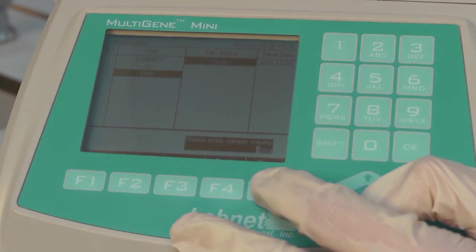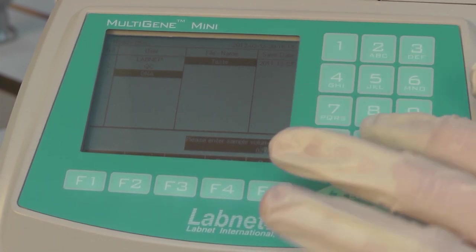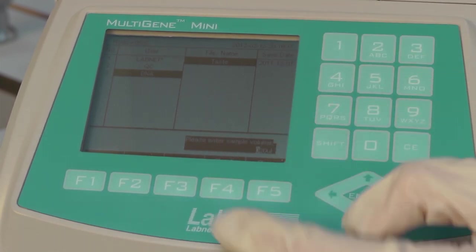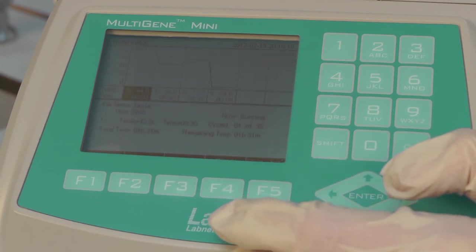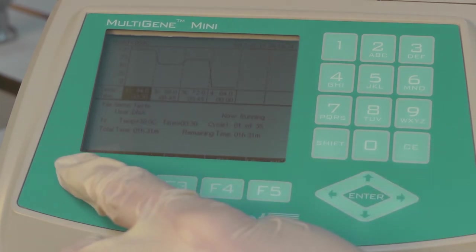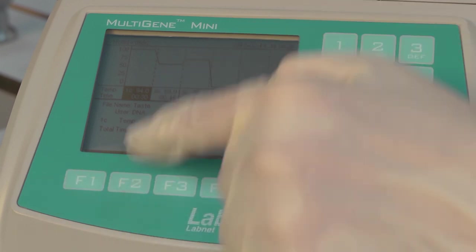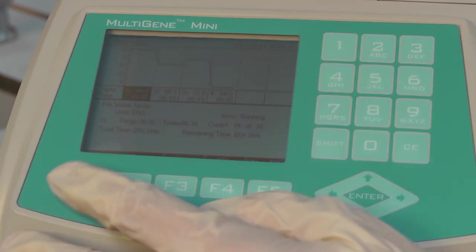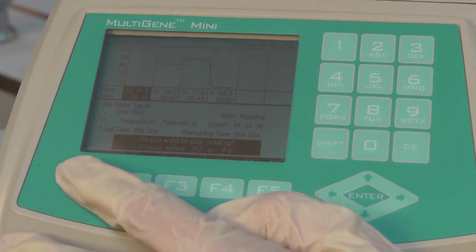It'll ask you the volume you want to write. So 220 microlitres there. And then just press run again. It should say now running. And if you ever want to stop or pause it, simply press these buttons underneath whatever you want to do. So stop. It'll ask you if you want to stop. Press stop again.